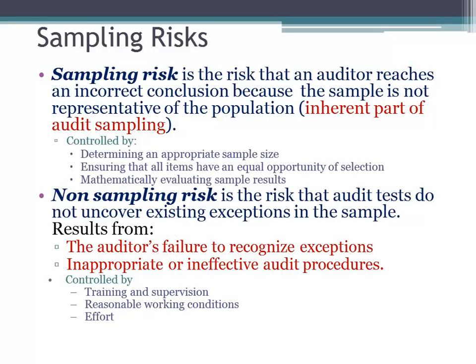Because we're sampling, we're going to select, let's say, 100 items out of maybe 1,000 items — and that's conservative. So in the remaining 9,000 items, there might be an error that we didn't detect because we never selected those items. There is the risk that the auditor reaches an incorrect conclusion because the sample is not representative of the population.